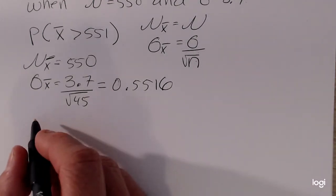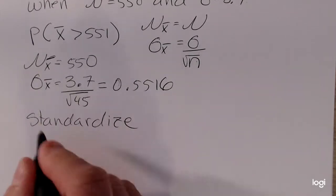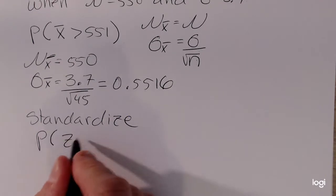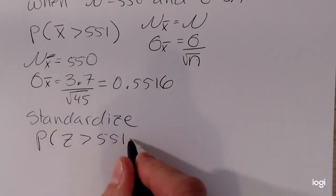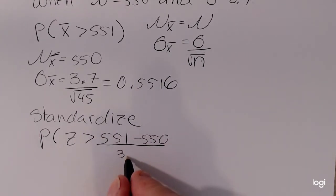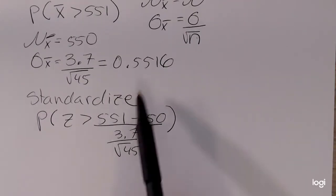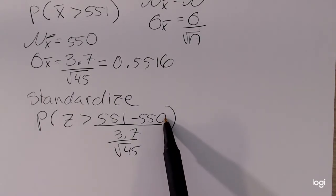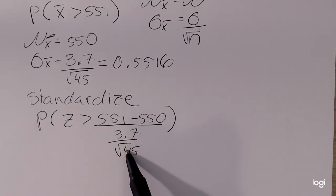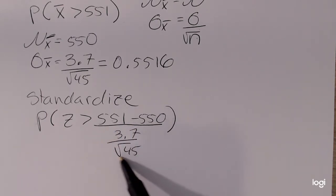So, if you did want to standardize or convert to a z-score, this is what it would look like. It would be the probability that z is greater than 551 minus 550, that difference divided by 3.7 over the square root of 45. Now, the general structure of a z-score is your observation minus the mean divided by a standard deviation. But because we're talking about the sample mean, the distribution of the sample mean, we can't use the original standard deviation. We have to use the standard deviation stated from the central limit theorem.